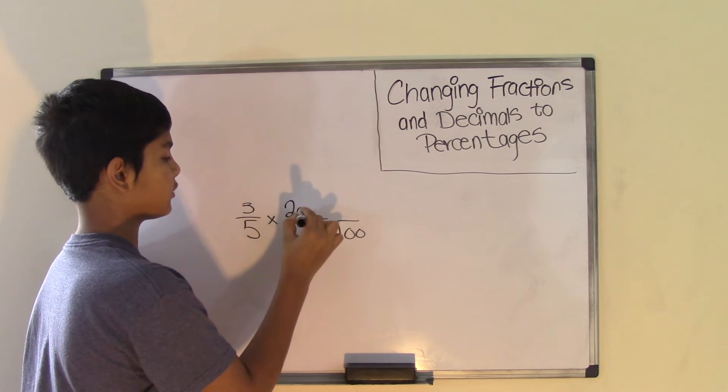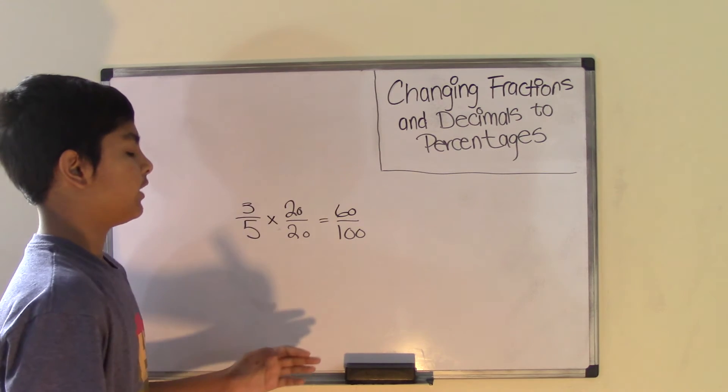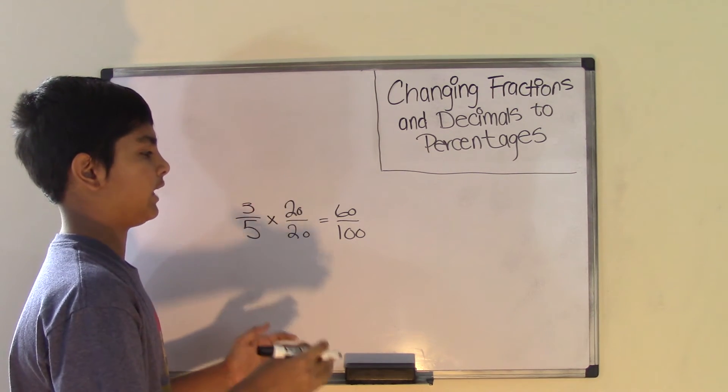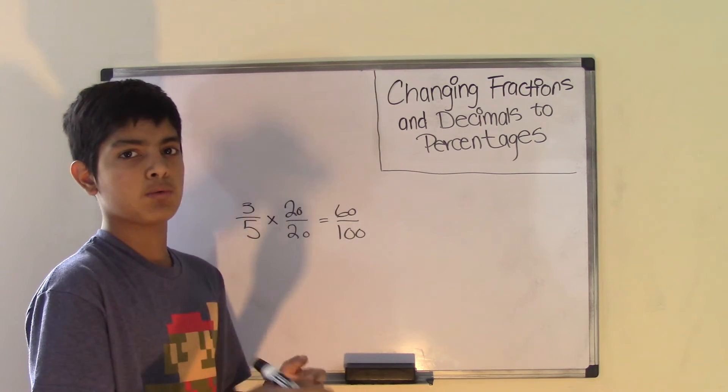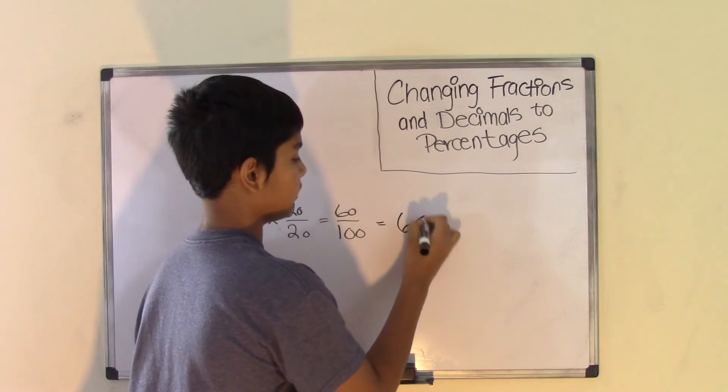So 3 times 20, and 3 times 20 we know is 60. And remember, as I told you, any number out of 100 is that number as a percent. So 60 out of 100 is 60 parts out of a whole which has 100 parts, so it's going to be 60 percent.